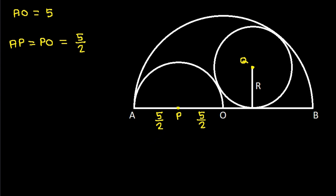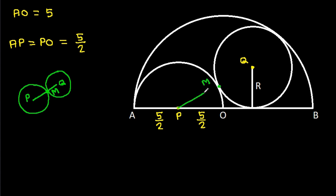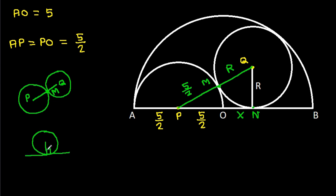Now, if we have two touching circles, suppose the centers are P and Q and the common point of contact is M, then if we join PQ it will pass through M. PM will be 5 over 2 and QM will be r. Suppose ON is x. In any circle, radius and tangent are perpendicular to each other, so this angle will be 90 degrees.